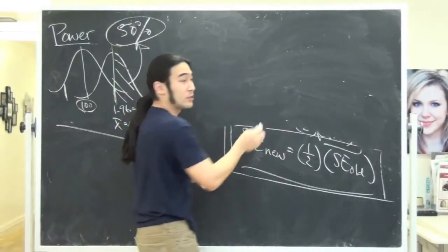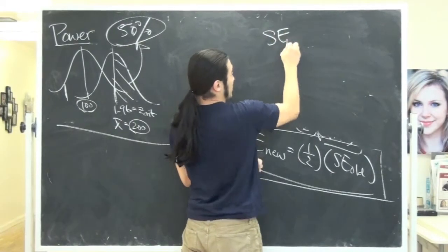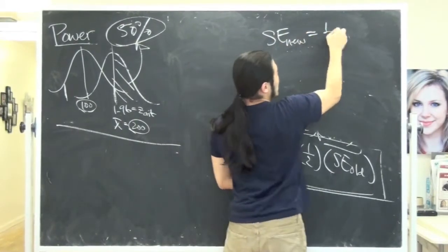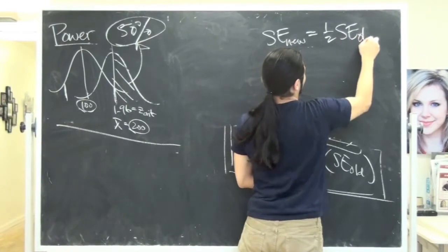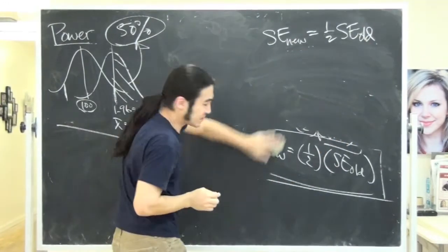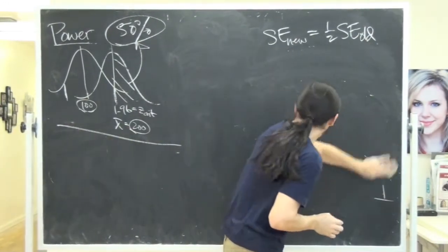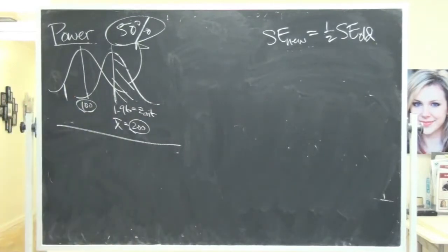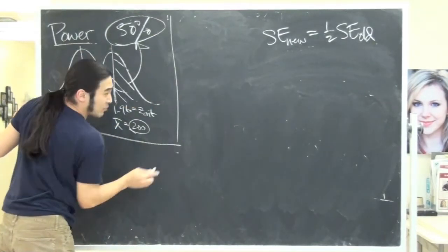Here's a video response for Psyc 100A statistics. So now what I want to do is just rewrite this so I have some board room. So standard error new is one half standard error old. I'm going to just clean this up. Hopefully it's not too bad.